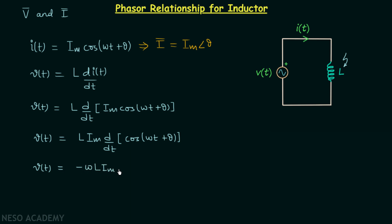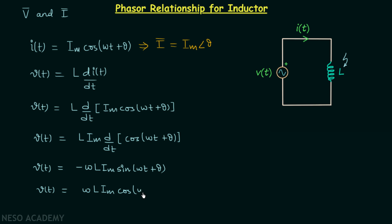V(t) is in sine form while I(t) is in cosine form. To compare V(t) and I(t) we should have the same forms, so we will convert V(t) into cosine form. We can write V(t) equal to ωL·Im·cos(ωt + θ + 90°).